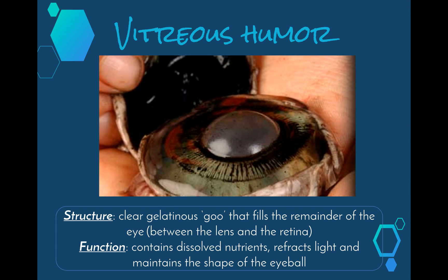Next we have the vitreous humour. Our eyeball has two different types of fluids separated by the lens. The vitreous humour is a clear gelatinous goo that fills the remainder of the eye between the lens and the retina. It is much thicker than the aqueous humour and can sometimes form clumps because it's more viscous. Its function is to contain dissolved nutrients for other parts of the eye such as the lens, help refract light, and maintain the shape of the eyeball. As soon as we cut into the sclera during our eye dissection, the vitreous humour will start to escape and the whole shape of the eyeball will completely change.